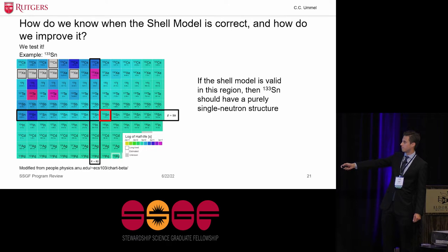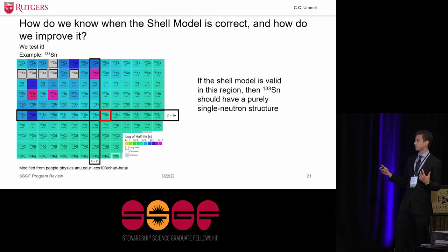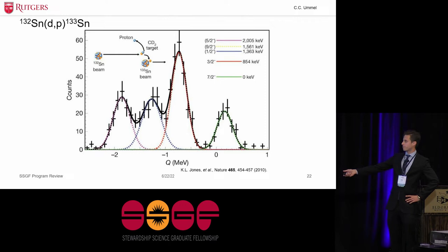So of course, these predictions are only as good as our model is accurate, so we need to know when it's correct, and we need to know how to improve it. And so we do that via tests. And a very famous test is that of tin-133, which is one neutron extra from the 50 proton and 82 neutron closed shells. So it has 83 neutrons, but 50 protons. And what the shell model predicts, if it's valid in this region, which I should note is really highly unstable, here are stable isotopes here, if the shell model is valid in this region, then tin-133 should have a purely single neutron structure. It should look like one neutron sitting on top of an inert tin-132 core. And so this experiment was very famously done by Kate Jones et al. in 2010. They used a tin-132 beam impinging on a deuterated polyethylene target, looking specifically on reactions on the deuterium in that target that split the proton and neutron, transferring the neutron onto the tin-132, making tin-133.